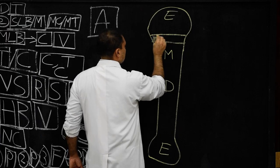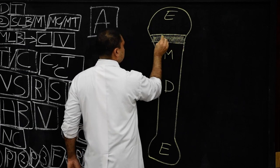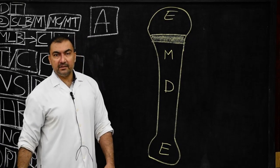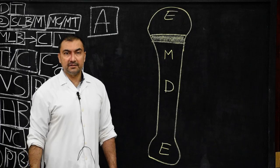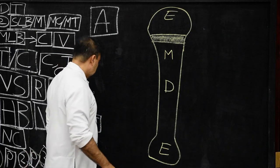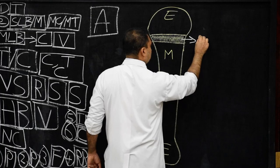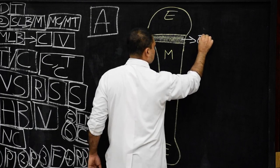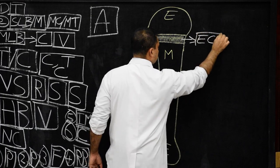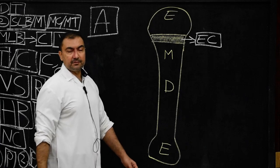Between the epiphysis and the diaphysis is the epiphyseal plate of cartilage. This is the epiphyseal plate of cartilage, labeled at both the upper and lower ends of the typical long bone.